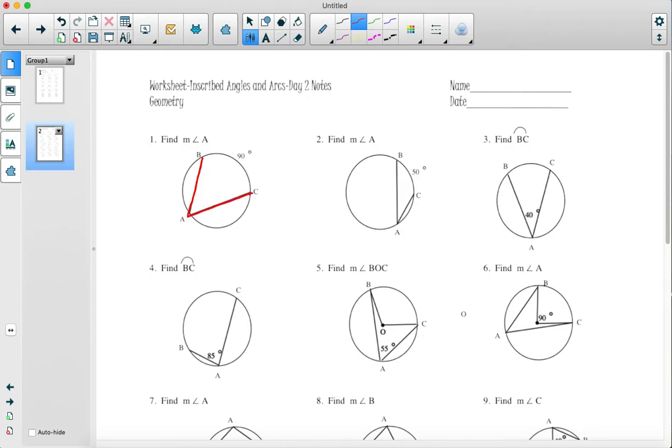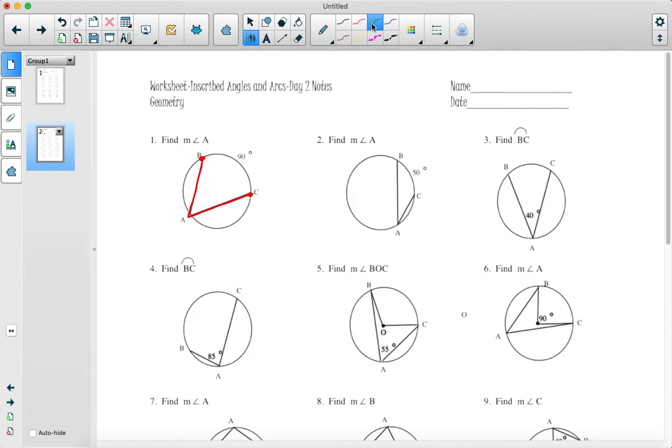When you're looking at an angle, it's important to look at these two points and where they are in the circle. This is called an inscribed angle because the vertex is on the circle. If it's an inscribed angle, then the arc that it intercepts, which would be the arc from B to C, is going to be twice as big as the measure of the angle. So if the measure of the arc is 90 degrees, the measure of angle A is going to be half of that, or 45 degrees.